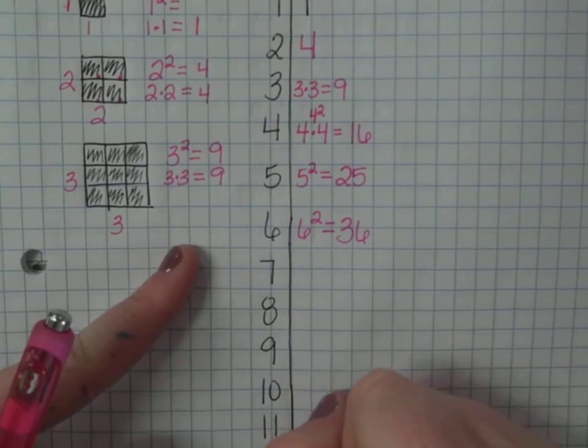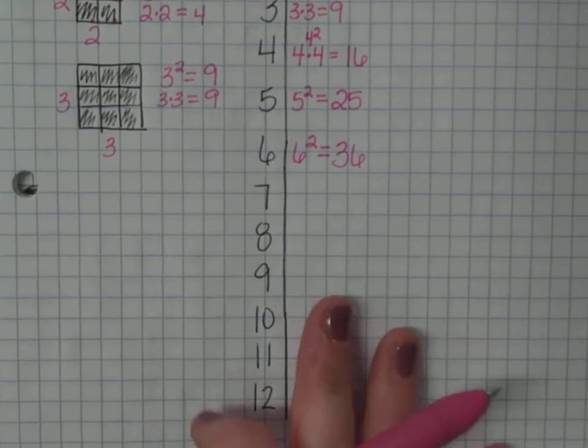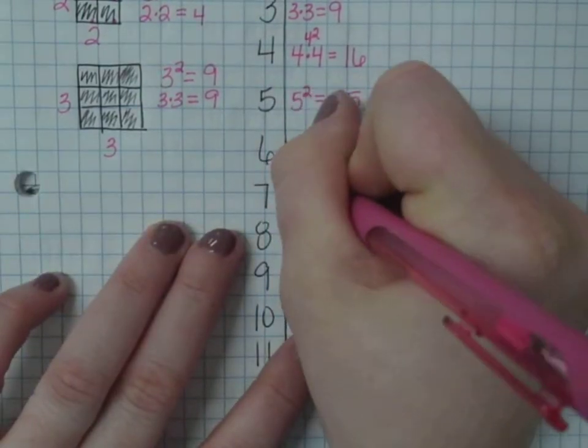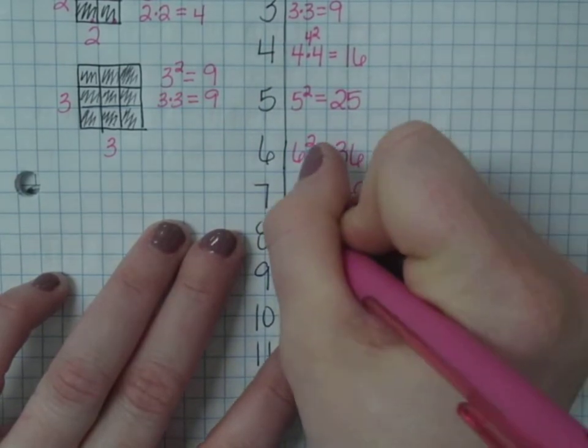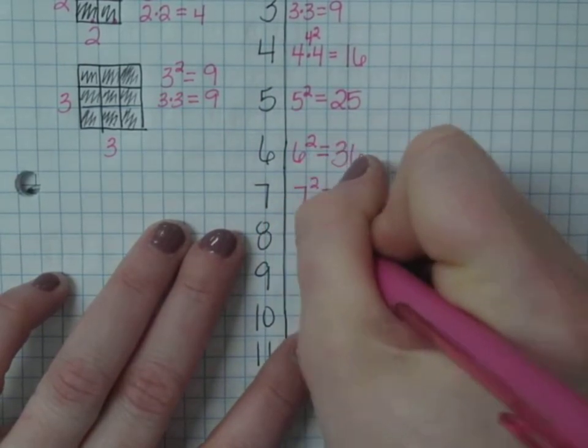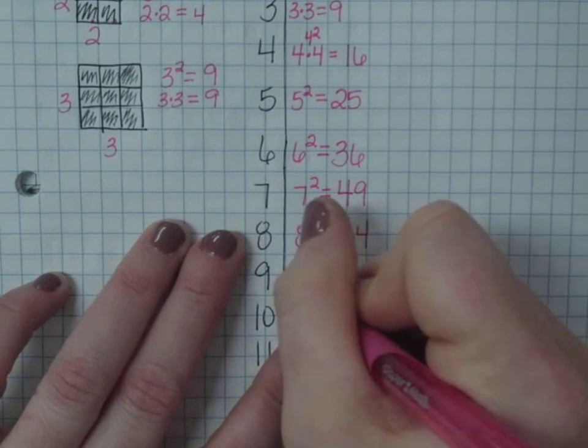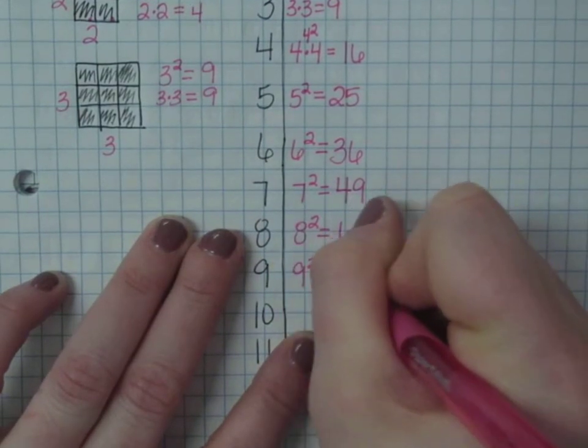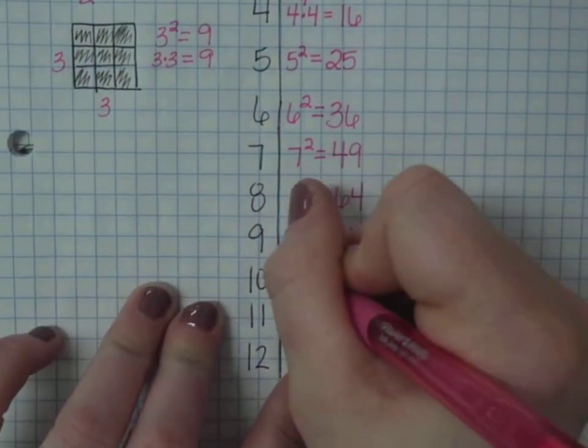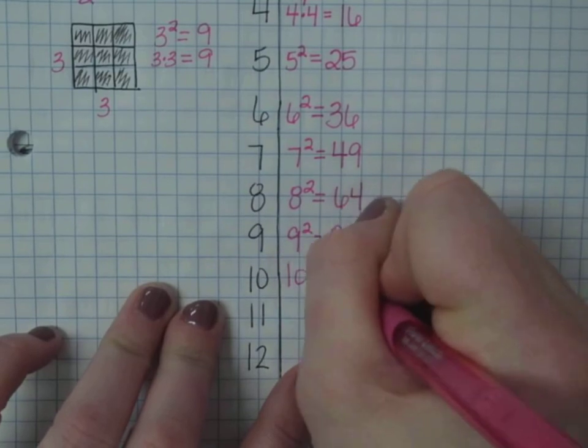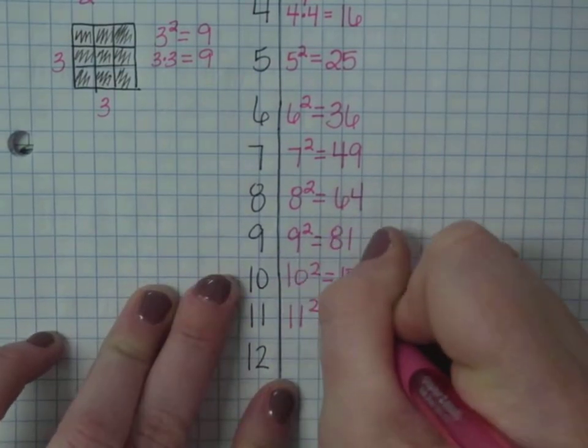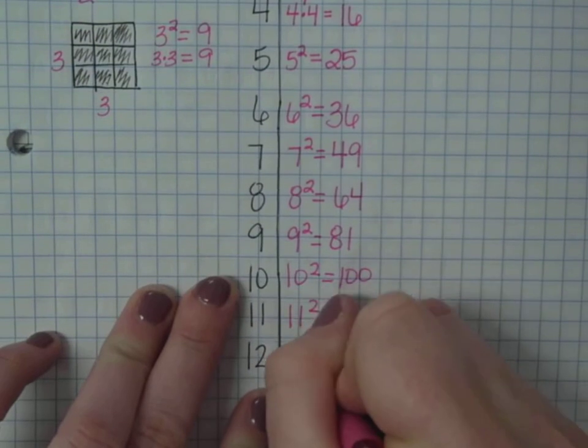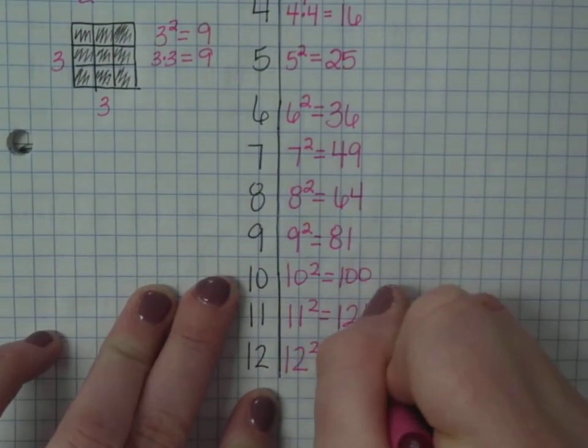So, 7 squared, 7 times 7 is 49. 8 squared is 64. 9 squared is 81. 10 squared is 100. 11 squared is 121. 12 squared is 144.